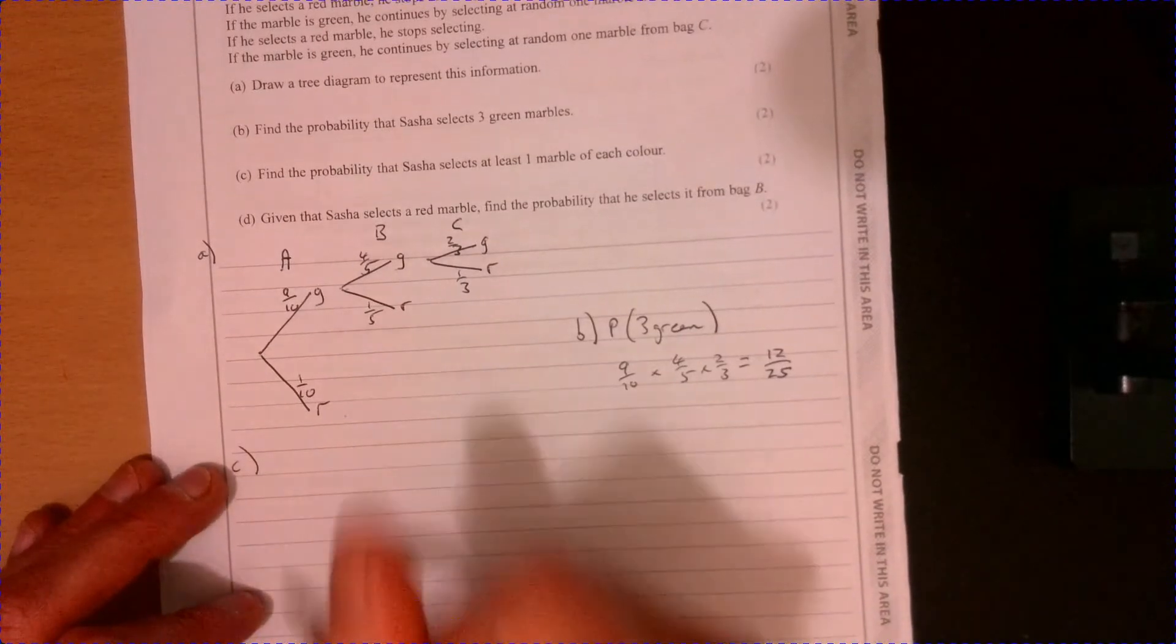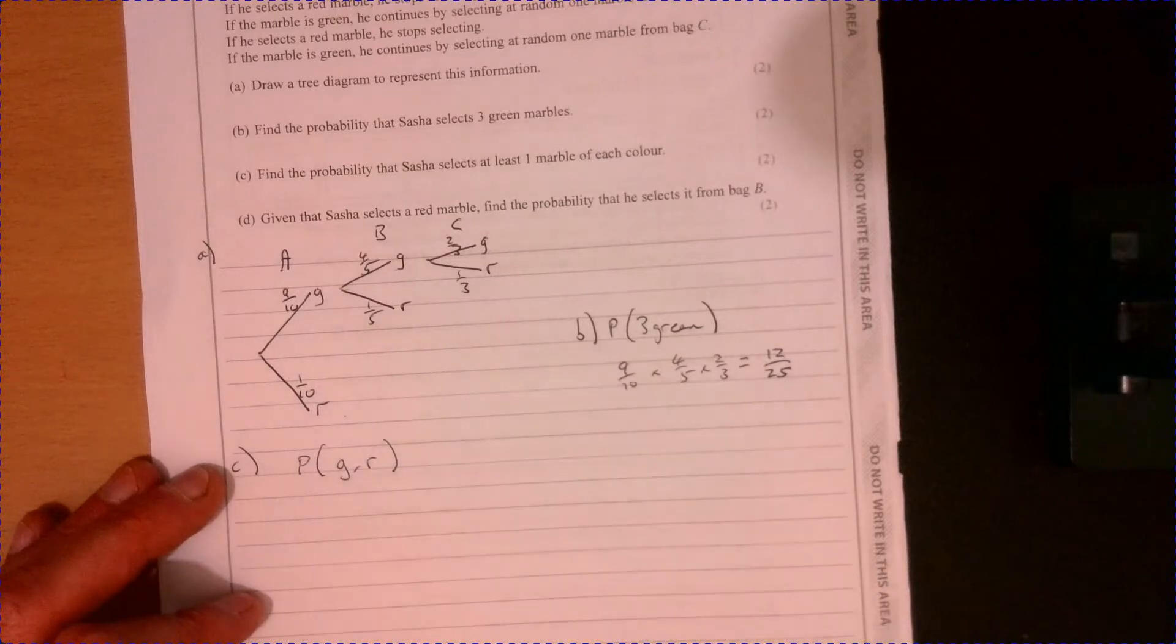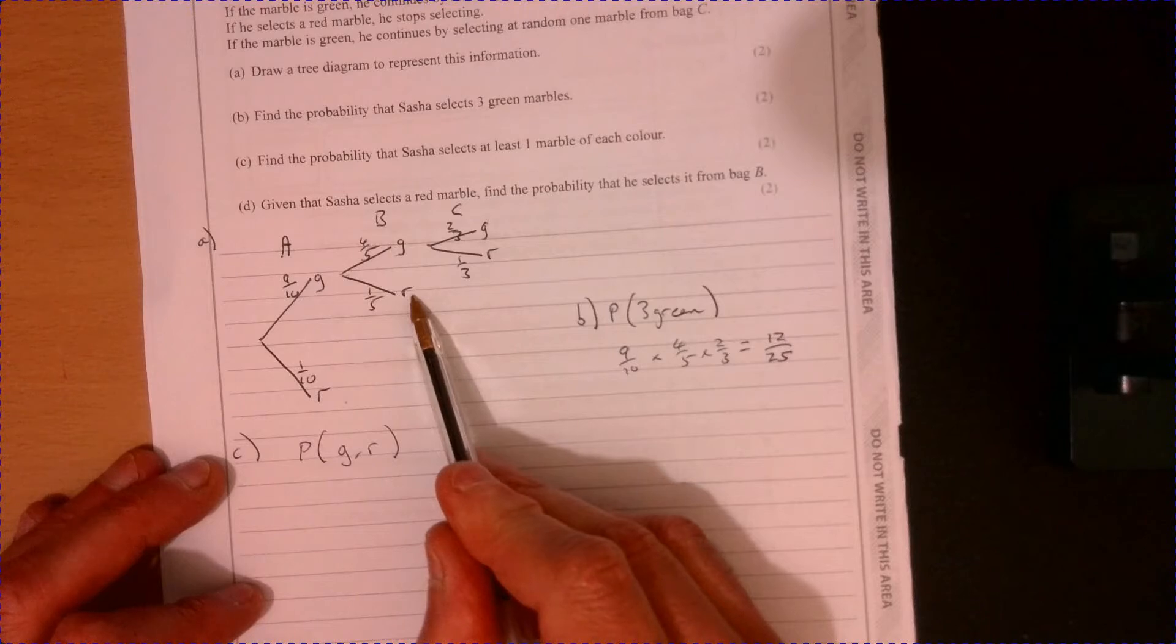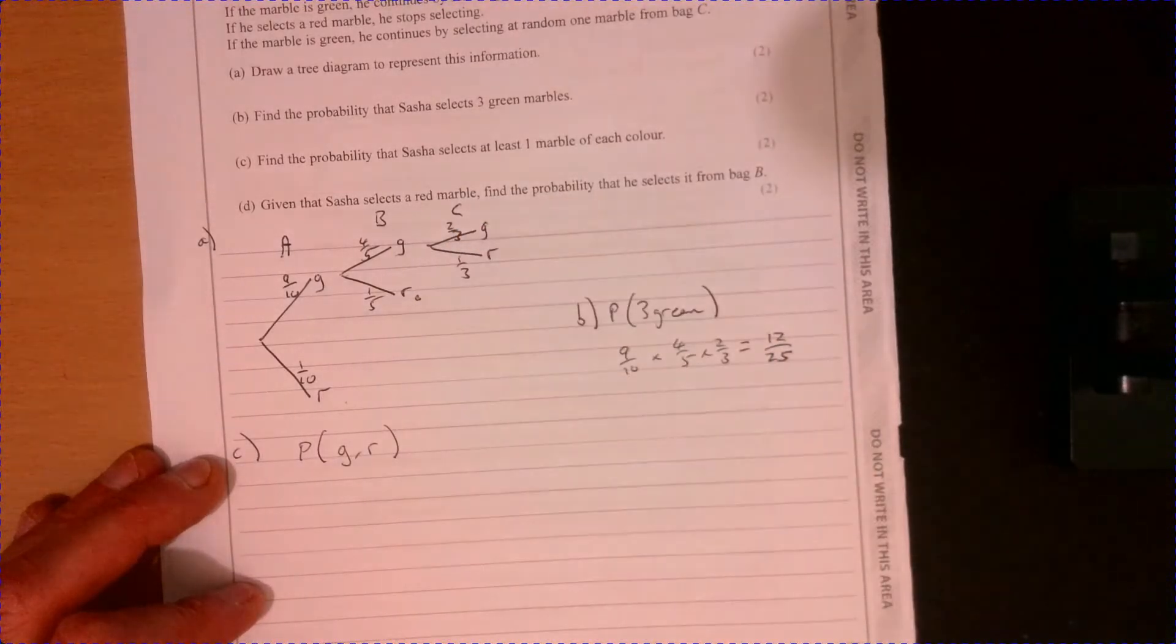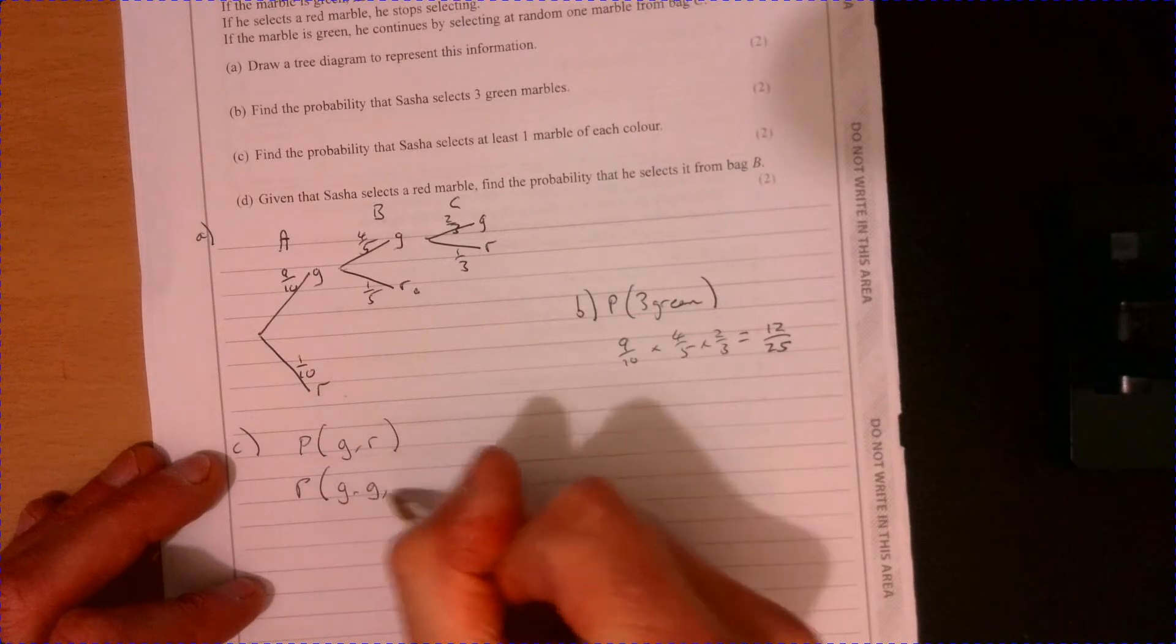Find the probability that Sasha selects at least one marble of each color. So where does that happen? That will happen when we go, so it could be green, red. That would be one of each color. So I'll go down this way, route.